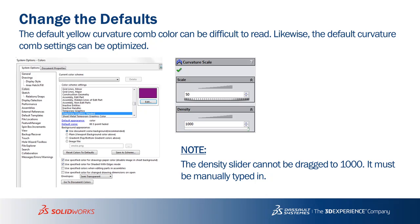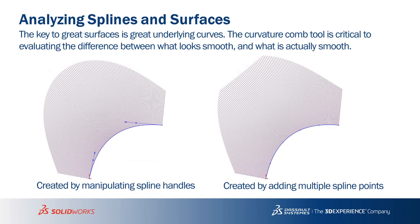I like changing the defaults. The default colors for the curvature combs are yellow, which are very difficult to see on a white background, especially in a presentation setting. I also like increasing the density so I can see more clearly what's happening in that curve — more individual porcupine quills along that curvature comb.